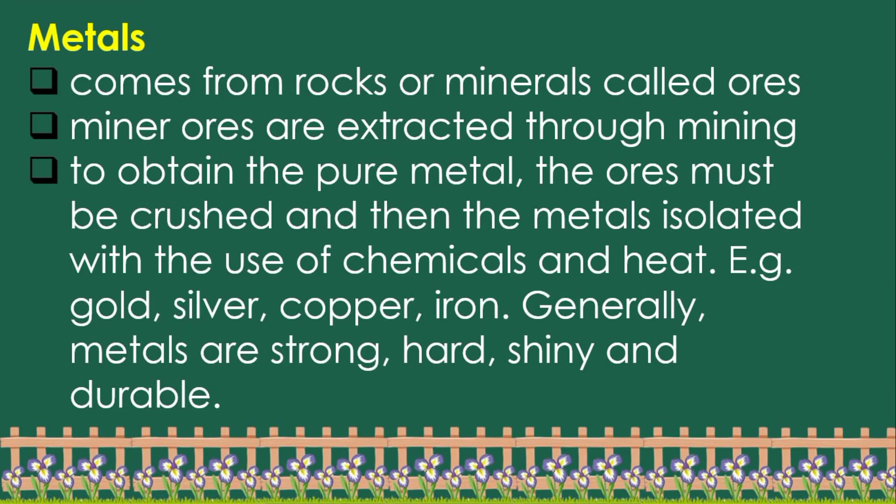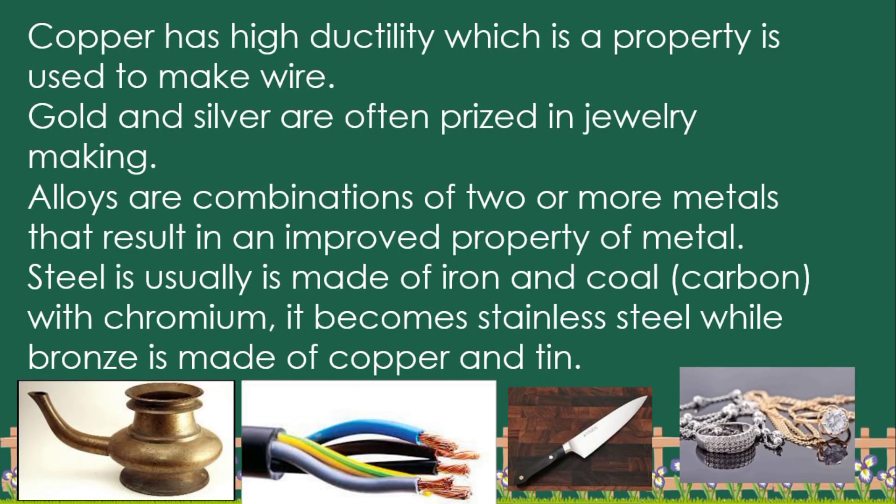Metals come from rocks or minerals called ores. Ores are extracted through mining. To obtain the pure metal, the ores must be crushed and then the metals isolated with the use of chemicals and heat — for example, gold, silver, copper, and iron. Generally, metals are strong, hard, shiny, and durable. Copper has high ductility, a property used to make wire. Gold and silver are often prized in jewelry making.